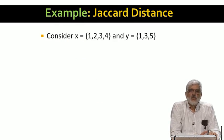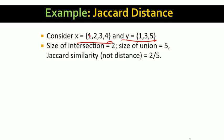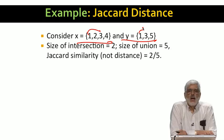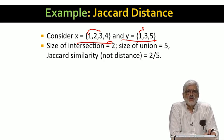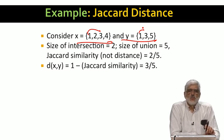Here's an example of Jaccard distance. Consider two sets x and y. Their intersection has two members, one and three, and their union has five members, the numbers one through five. Thus, their Jaccard similarity is two-fifths. Now we want Jaccard distance, which is one minus two-fifths, giving us a Jaccard distance of three-fifths.